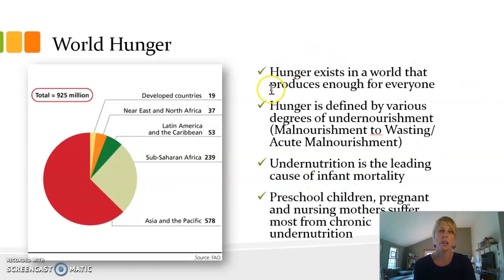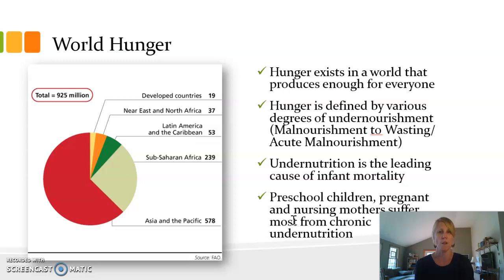We know that hunger exists in a world that produces enough food for everyone, which makes it a very troubling issue, particularly when talking about public health on a global scale. Hunger is defined in various degrees of undernourishment, from malnourishment to what's called wasting, which means acute malnourishment. Undernourishment is the leading cause of infant mortality, and women and children are really the most at risk. Preschool children and pregnant and nursing mothers suffer the most from chronic undernourishment.